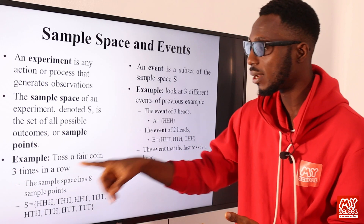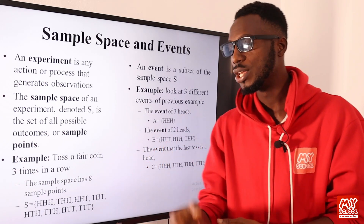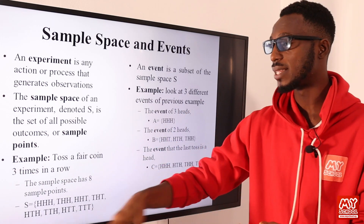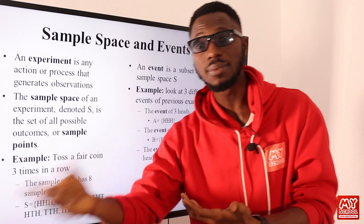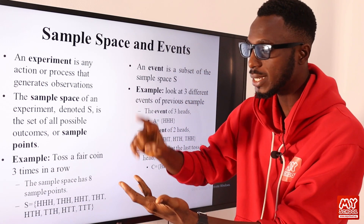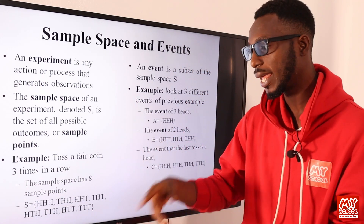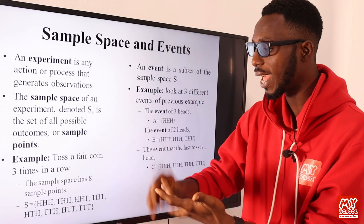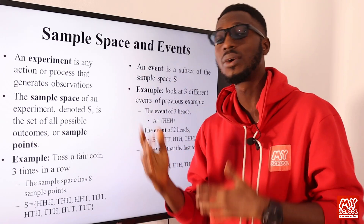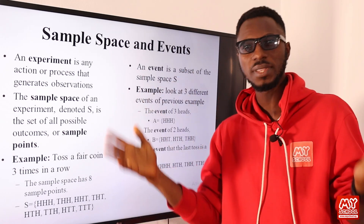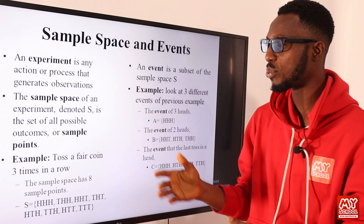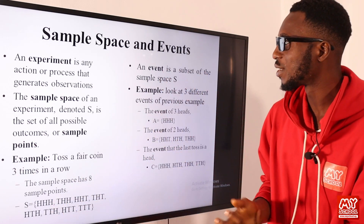If I toss a coin three times in a row, it is possible that the three times I toss the coin I can get head, head, head; or tail, head, head; or tail, head, tail; or tail, tail, tail; or tail, head, tail — and so on. So all the possible outcomes I can get form your sample space.